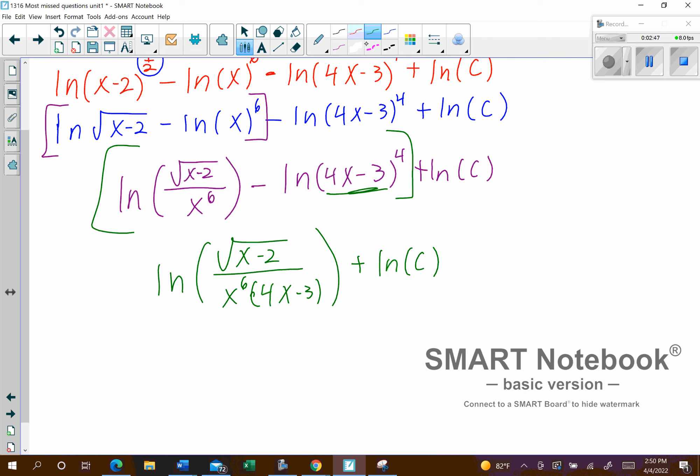And so then now, when you have addition going on, that actually is going to go up with the numerator, that c value right there. So we're going to end up with the natural log, probably going to look better if I put the c in front. So c times the square root of x minus 2 all over my denominator, which is x to the power of 6 times 4x minus 3.